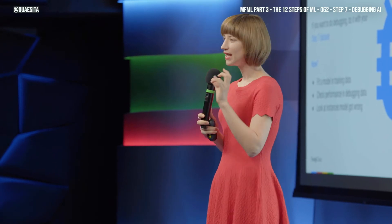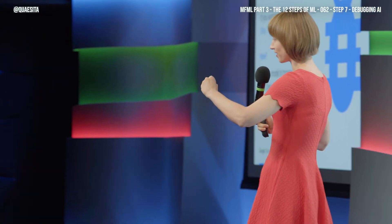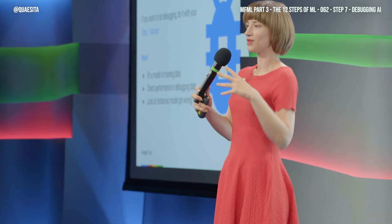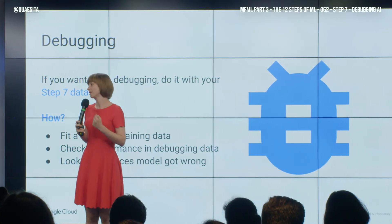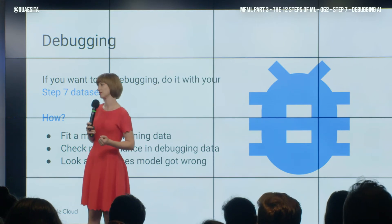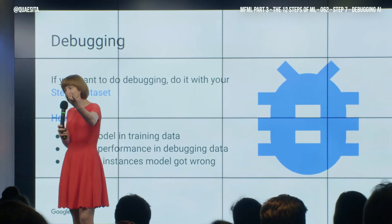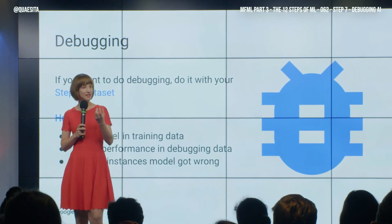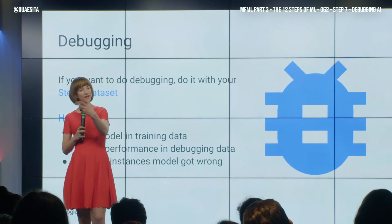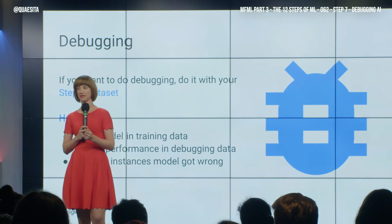Debugging in your training data set — the data set where you ran the algorithm — doesn't really give you an honest view of what's going wrong. Because the whole point is trying to put the boundary or the line as conveniently through the data as it can. It's already contorting itself to your data set. And so you don't really see where it fails. Debugging in that is fine, and you get some insight. But the real insight you get is by taking a data set where it didn't have the chance to contort itself and seeing which ones did it get right, which ones did it get wrong.